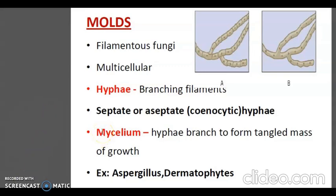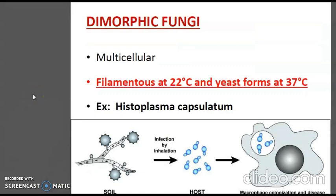Hyphae may be septate or non-septate. The septa, when present, have holes through which free flow of cytoplasmic material can take place. Dimorphic fungi can occur as filaments or as yeast depending on conditions of growth. In host tissue or cultures at 37°C they occur as yeast, while in the soil and cultures at 32°C they appear as molds. Most fungi causing systemic infections are dimorphic. An example is Histoplasma capsulatum.